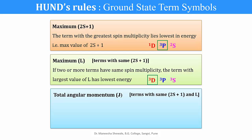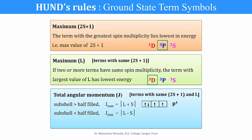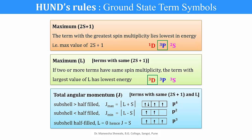When terms have the same spin multiplicity and the same L, the value of J decides the ground state based on filling of electrons in the subshell. If the subshell is more than half filled, J has the maximum value L+S, as in the P4 configuration. If the subshell is less than half filled, J has the minimum value |L−S|, as for the P2 configuration. If the subshell is half filled, L turns out to be 0 and hence J equals S, as seen for the P3 configuration.